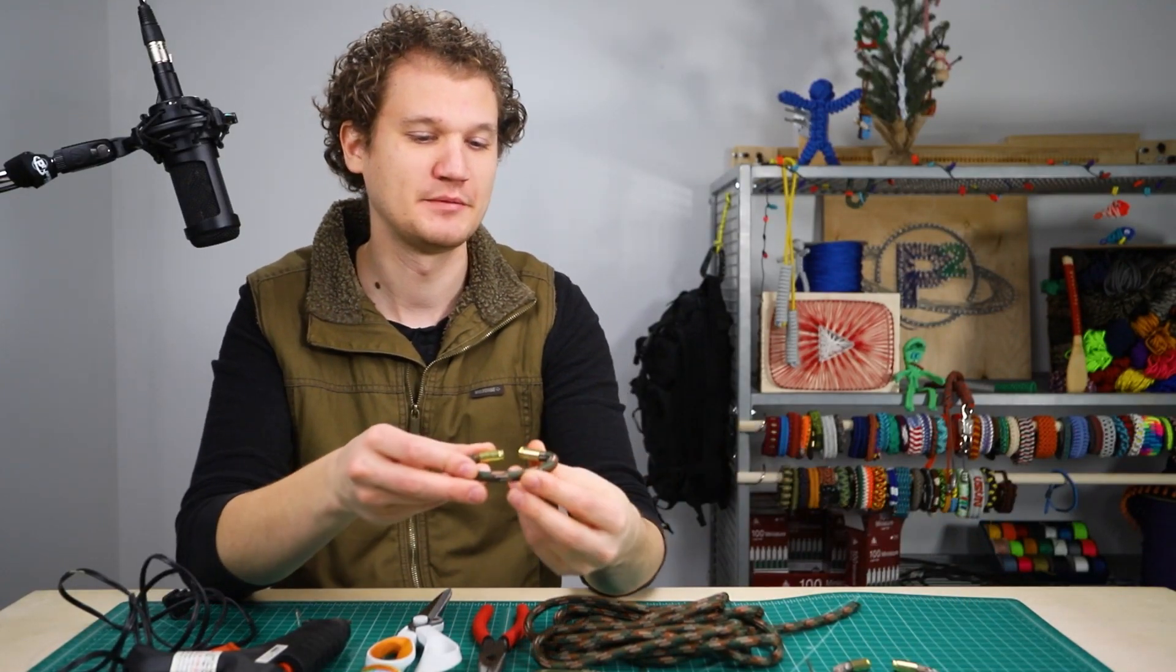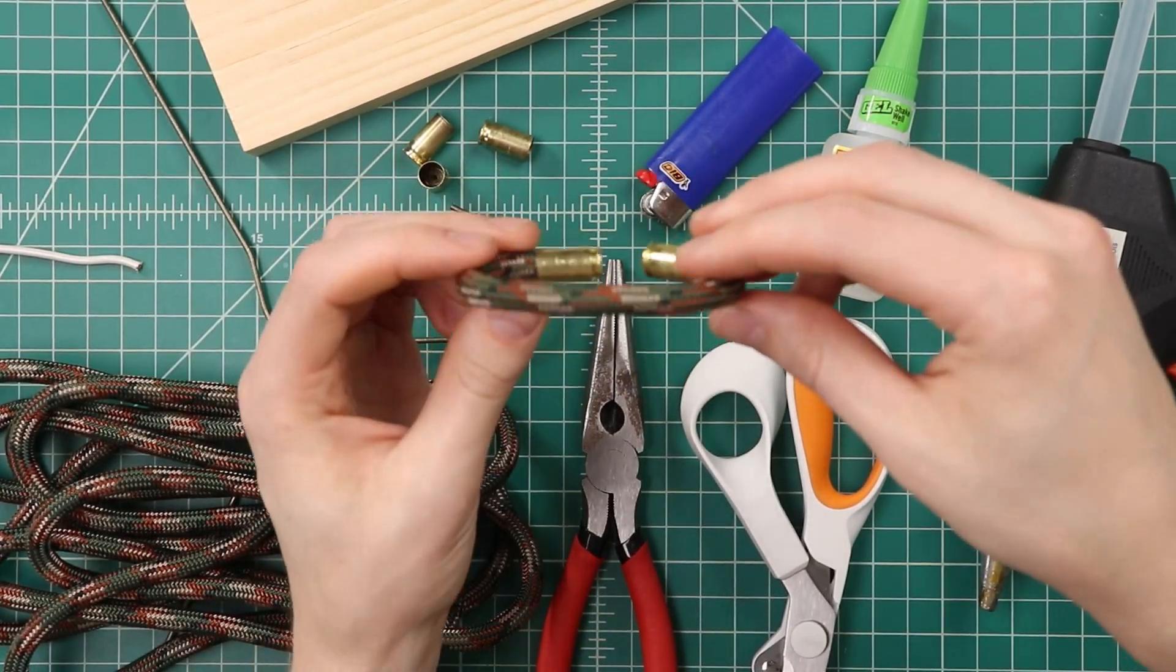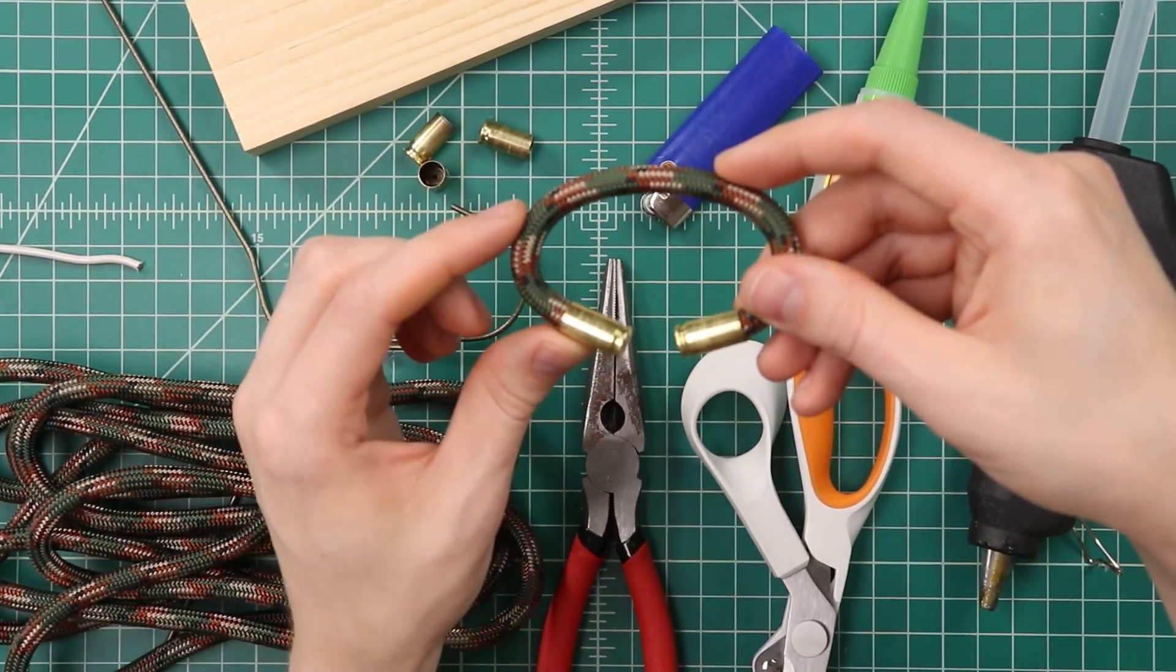Hey guys, welcome back to Paracord Planet. Today we're going to be making a bullet casing bracelet. I've seen these all over social media, mostly on Pinterest, but I thought they looked really cool. I like the rustic look of them with the textured cord and the casings.